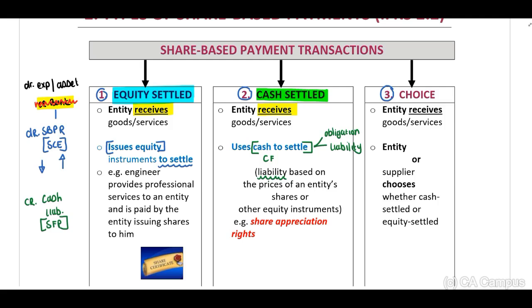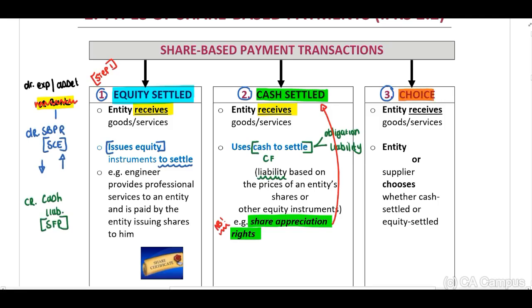The credit side of the entry is replaced by either a share-based payment reserve or a cash liability. When you read a scenario mentioning share appreciation rights, you immediately need to know this will be cash settled. This is your first step with any IFRS 2 question: identify whether it is equity settled or cash settled. The third type involves a choice, where the entity receives goods or services and either the entity or the other party can choose to settle in cash or equity.